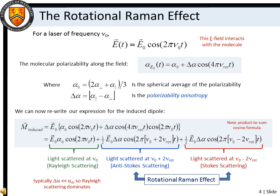We can describe the time-dependent oscillation of the laser field in terms of the laser frequency. The molecular polarizability along the field direction can be described in terms of the spherical average of the polarizability and the polarizability anisotropy. Thus, the time-dependent induced dipole moment has frequency components at the same frequency as the incident laser light, and at the laser frequency plus or minus the rotational frequency. The first term is associated with Rayleigh scattering. The second two terms are associated with the rotational Raman scattering effect.